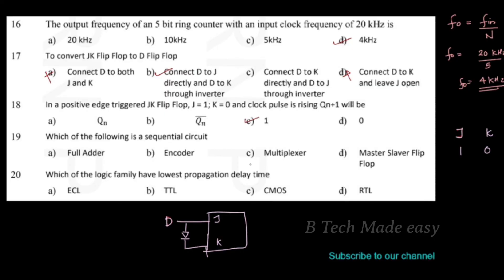Next question: which of the following is a sequential circuit? The options are full adder, encoder, multiplexer, and Master-Slave flip-flop. The Master-Slave flip-flop is a sequential circuit; the others — full adder, encoder, and multiplexer — are combinational circuits.